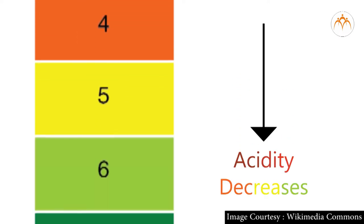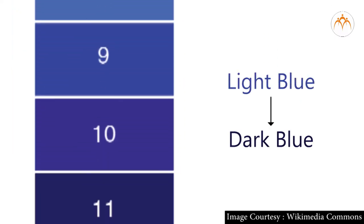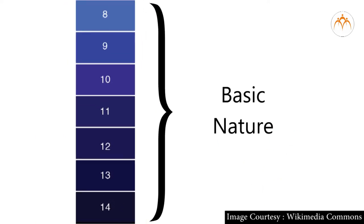Value 7 indicates that the solution is neutral and shows green color. Light blue or dark blue color range indicates basic nature of a solution. It ranges between 7 to 14 in increasing order.